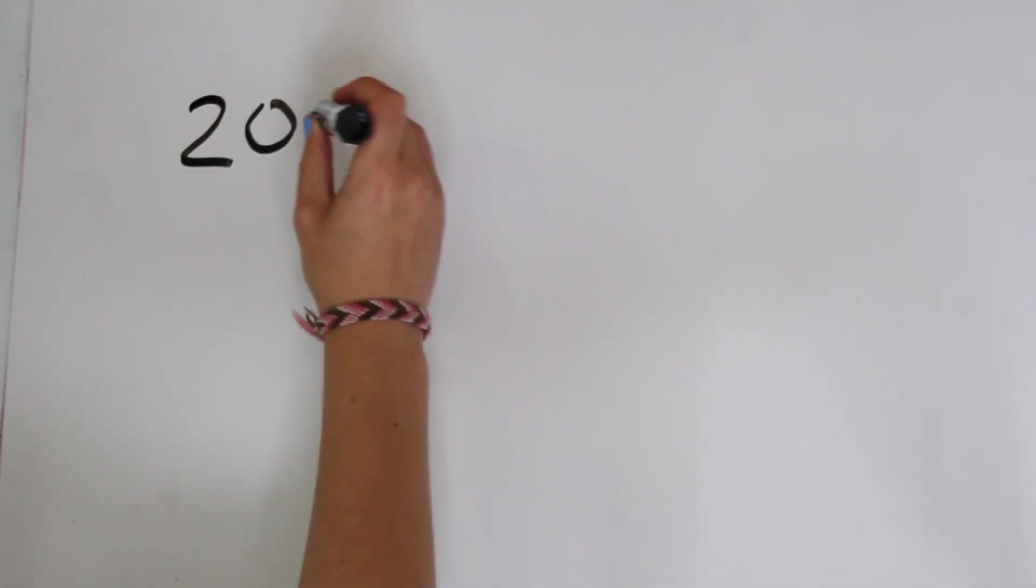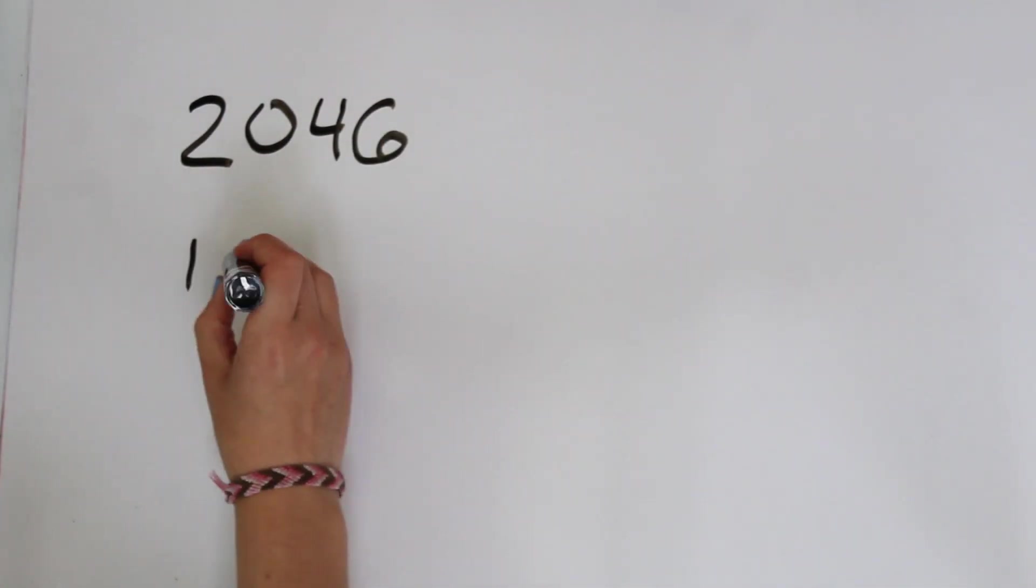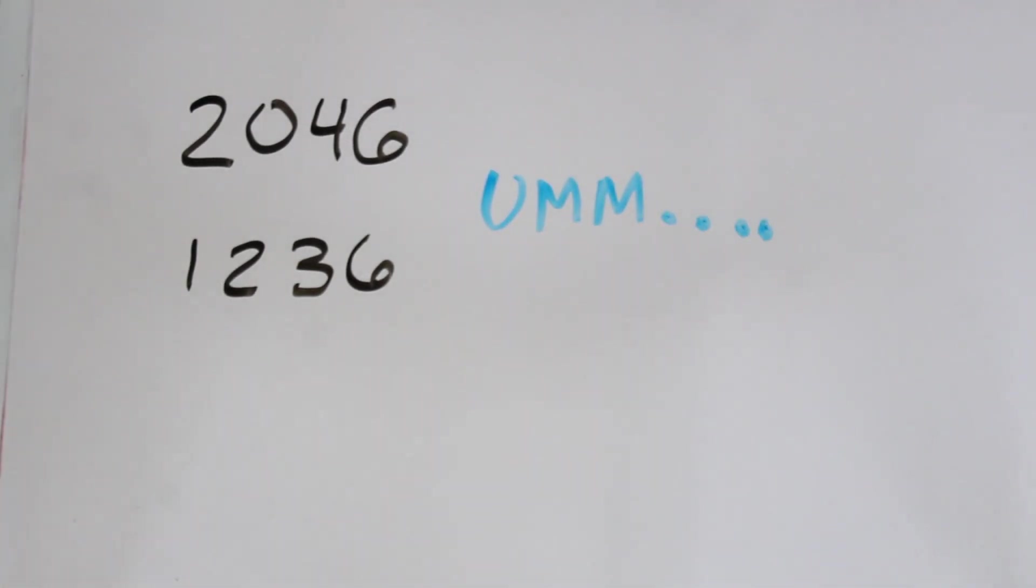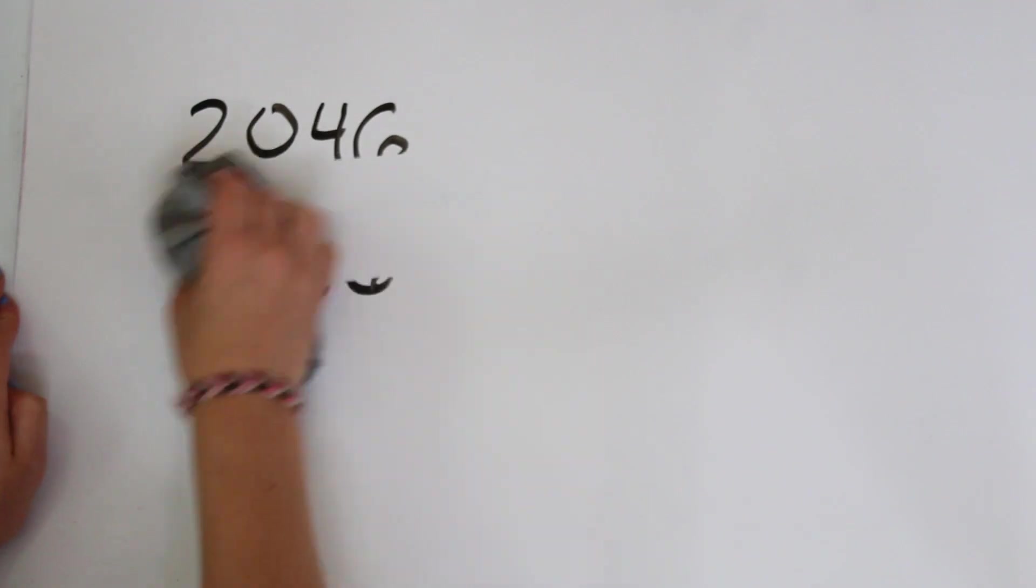Well, this method of writing out all of the factors won't really work if we have really big numbers, because who knows all of the factors of 2046. It would take a long time to write them out. So this is where the Euclidean algorithm is going to come into play.